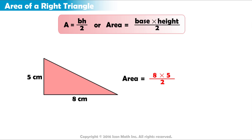To evaluate the expression, we first multiply 8 and 5 to get 40. Then, we divide by 2. The result is 20. The area of this right triangle is 20 centimeters squared.